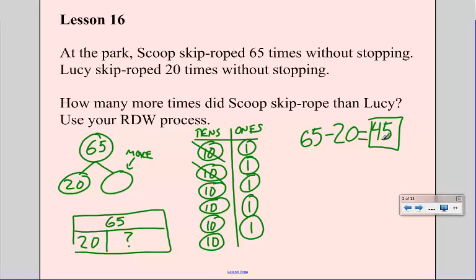We could solve this problem a bunch of other ways, right? I could have taken 20 away from this, from 65. 20 minus 20, so I would just have to know that 65 is made up of 45 and 20.